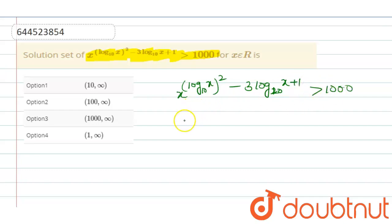Here, take log on both sides. We get log[x^((log₁₀x)² - 3log₁₀x + 1)] > log(10³).